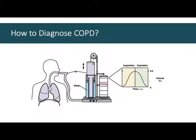Every upward line indicates inspiration. When they breathe out again, they're putting air back into the bell, the pen drops, and the downward line means expiration. The water is only there to make sure it's an airtight seal. We don't use these very often anymore — we simply have them on hand to show you what we used to do.